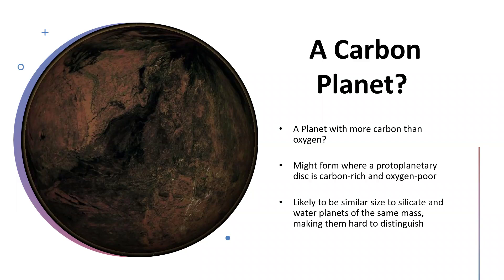If you did have a carbon planet, it would be quite difficult to tell the difference just from looking at its size and mass — although you could possibly infer it didn't have a metal core, which would affect its overall density. But if you can study these things with a spectroscope, then you can get a good idea of what they're made of.